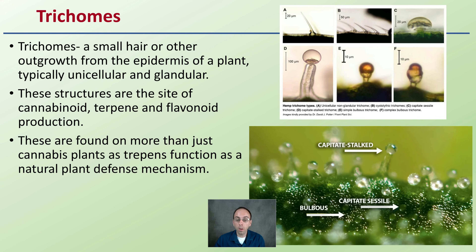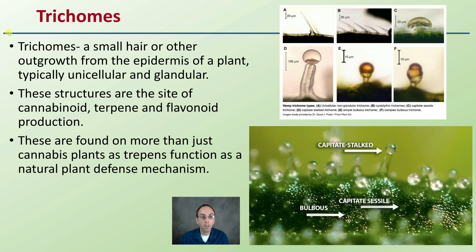So first off, what is a trichome? Trichomes are small hairs or other outgrowths of the epidermis of the plant, typically unicellular and can be glandular. These structures are the site of cannabinoid, terpene, and flavonoid production — this is why growers consider them so important. They're found in more than just cannabis plants, as terpenes function as a natural plant defense mechanism in other plants as well.